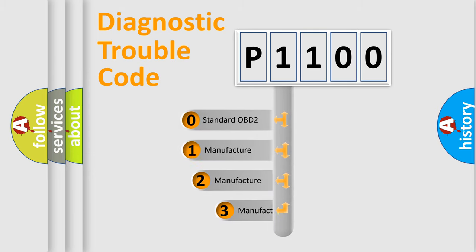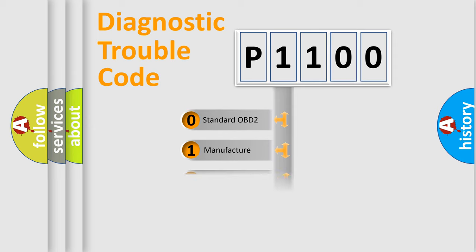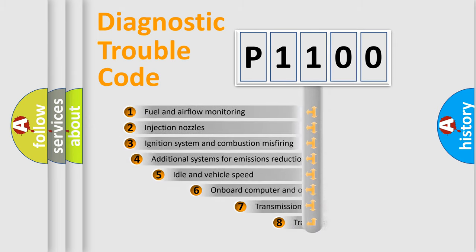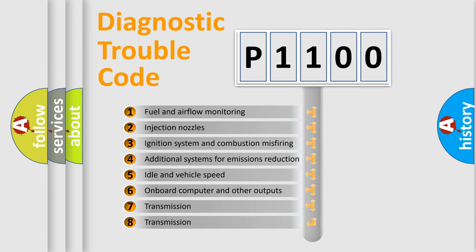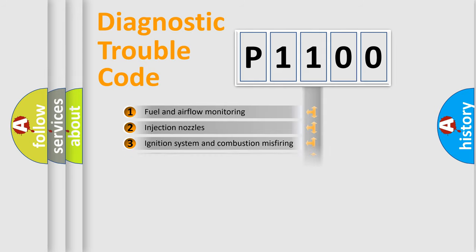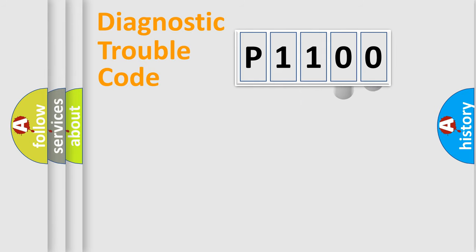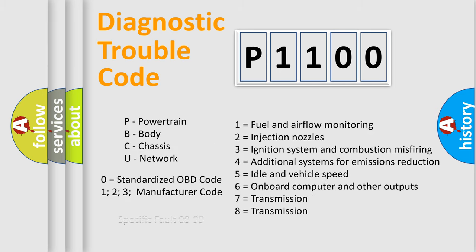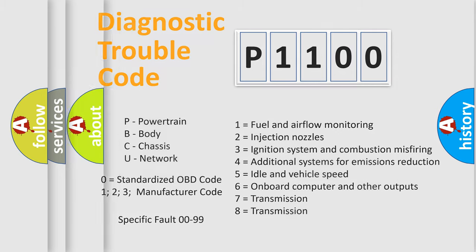If the second character is expressed as zero, it is a standardized error. In the case of numbers 1, 2, or 3, it is a more specific expression of a car-specific error. The third character specifies a subset of errors. This division is valid only for the standardized DTC code, where only the last two characters define the specific fault of the group — and only when the second character is zero.